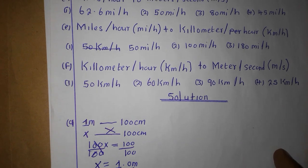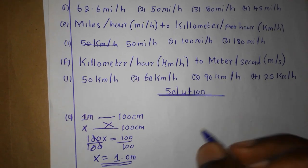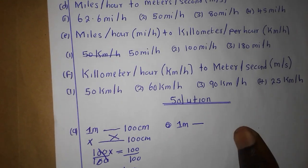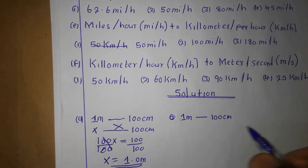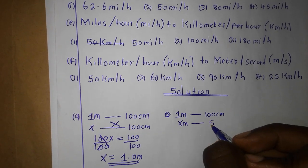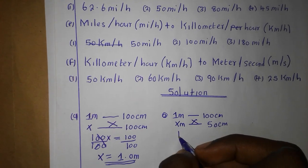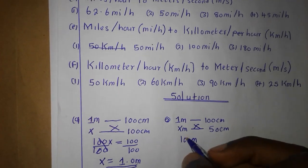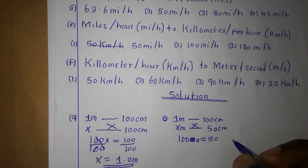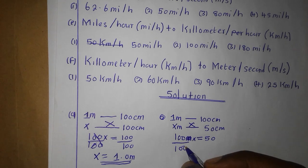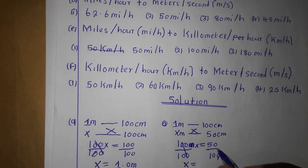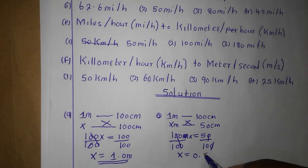The second question says: convert 50 centimeters into meters. The same concept applies. 1 meter equals 100 centimeters. Therefore x meters corresponds to 50 centimeters. Cross-multiplying: 100x = 50. Divide both sides by 100 and our answer is 0.5 meters.